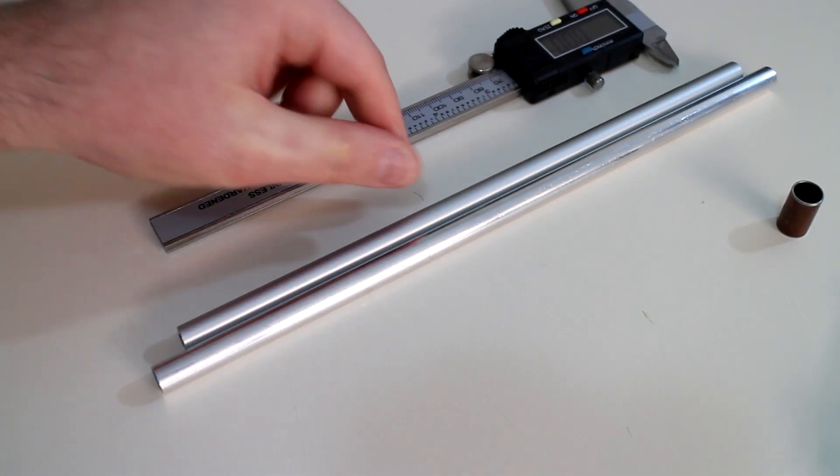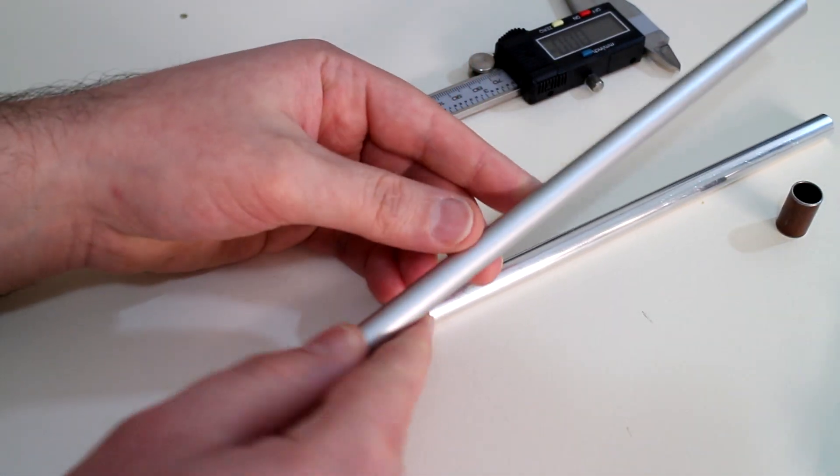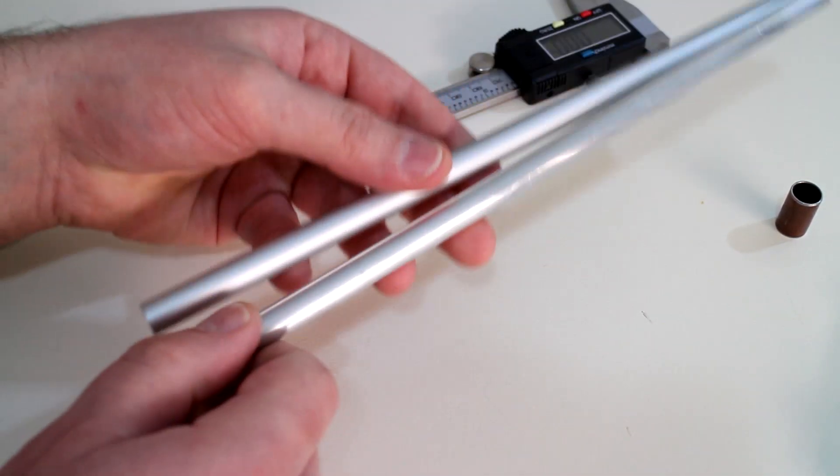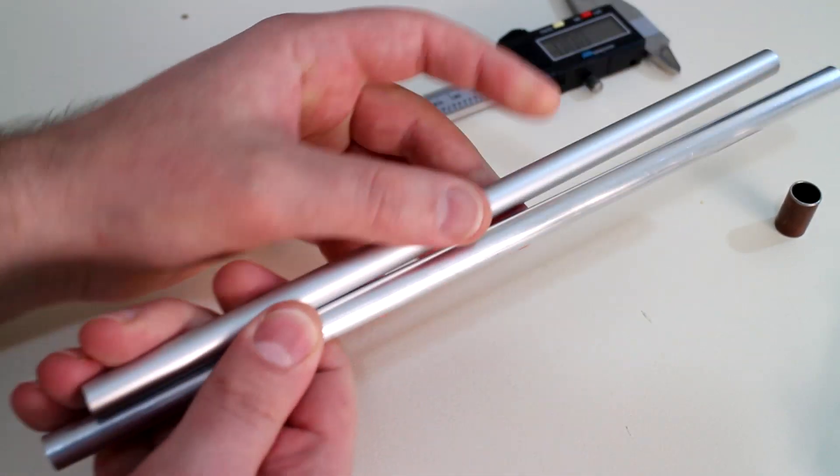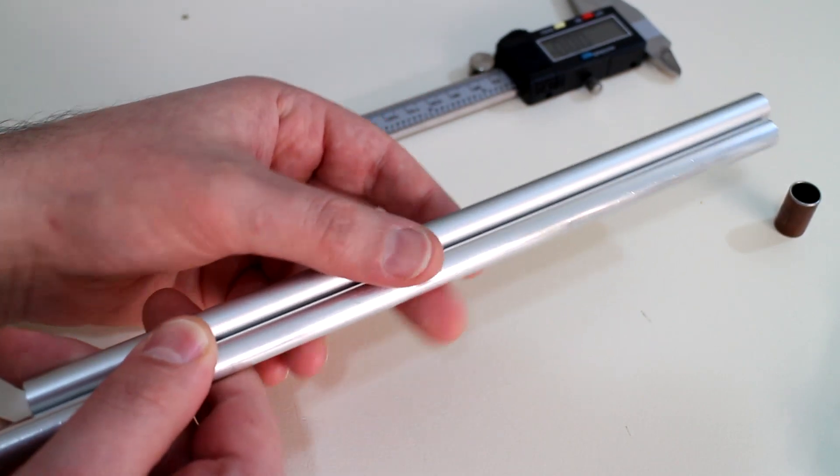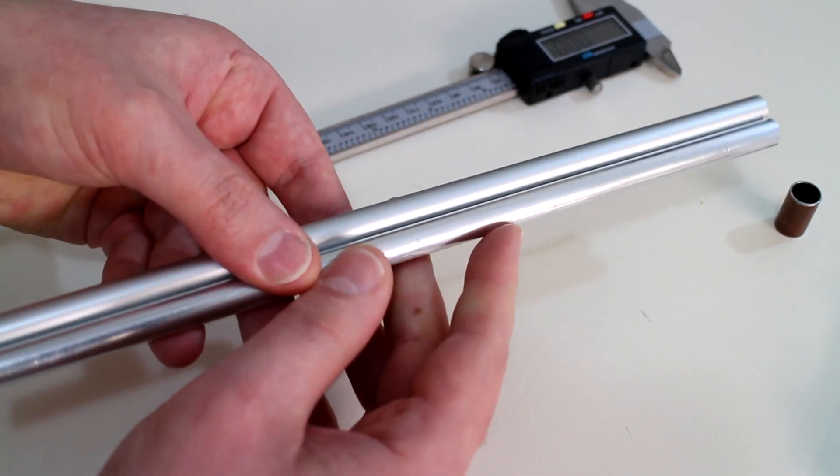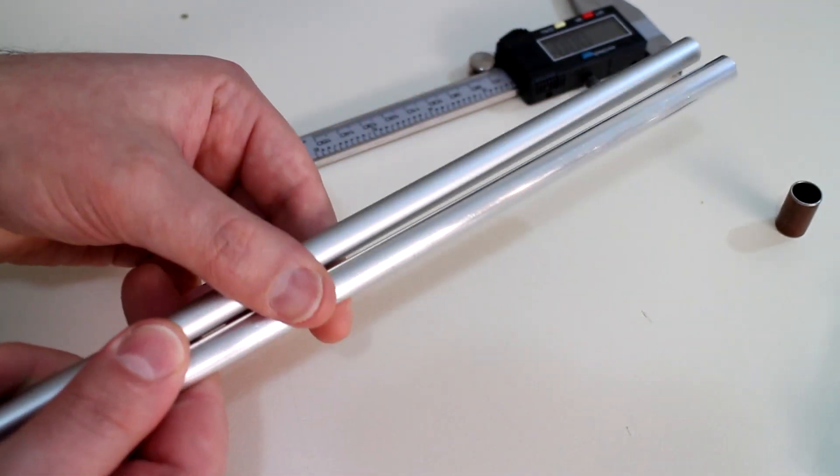The anodized aluminum rods are finally here. I had to buy this in a three meter length and chop it down myself. The first difference you'll notice between the raw aluminum on the right and the clear anodized aluminum on the left is the surface finish. The raw aluminum is very shiny while the clear anodized has a dull or matte finish.